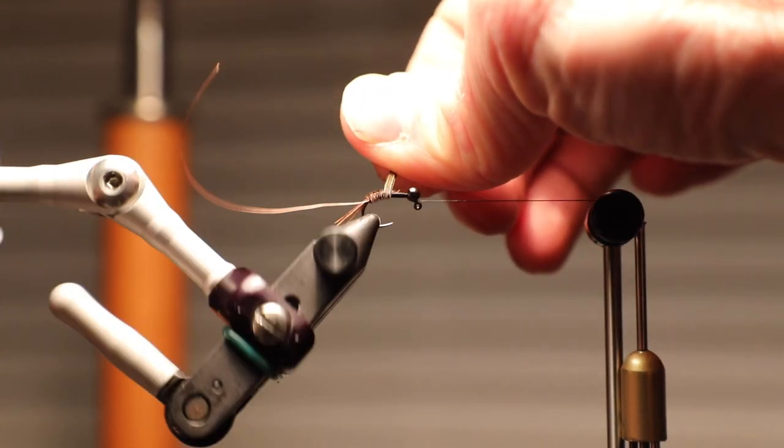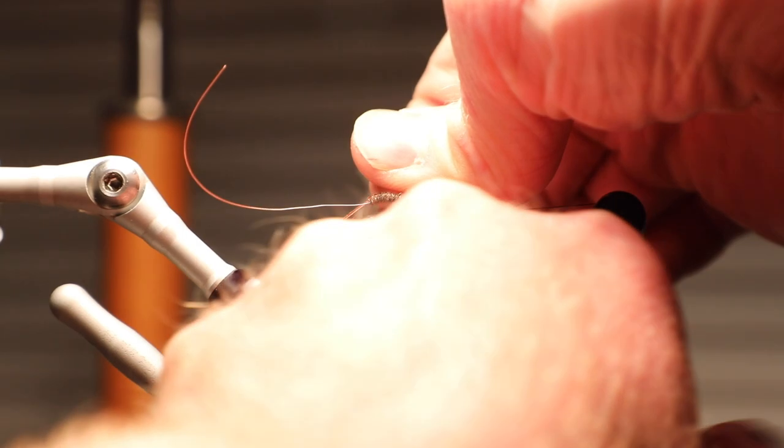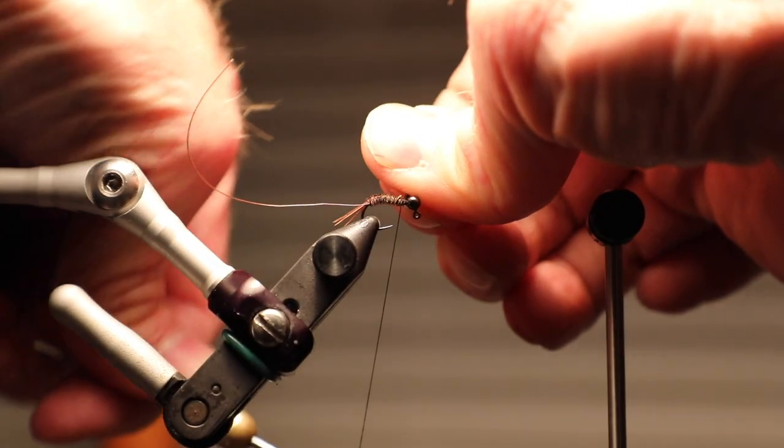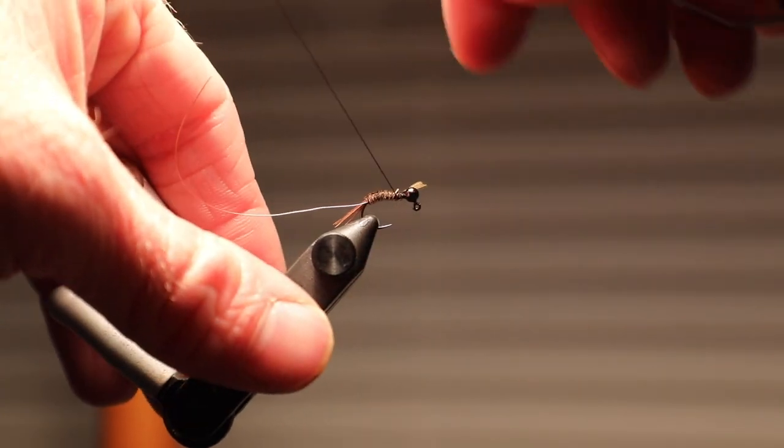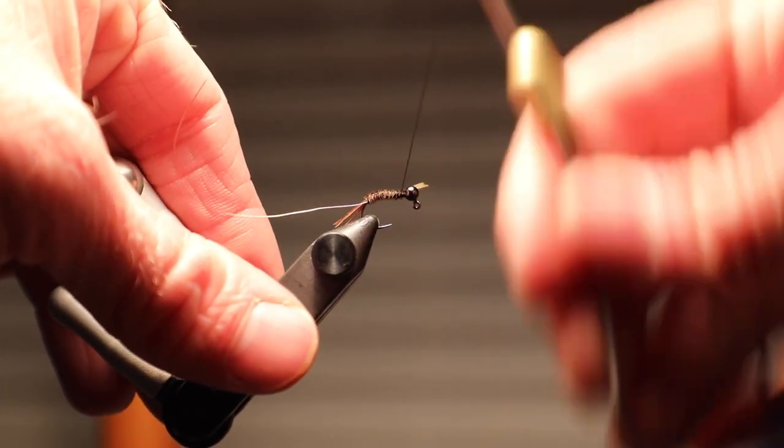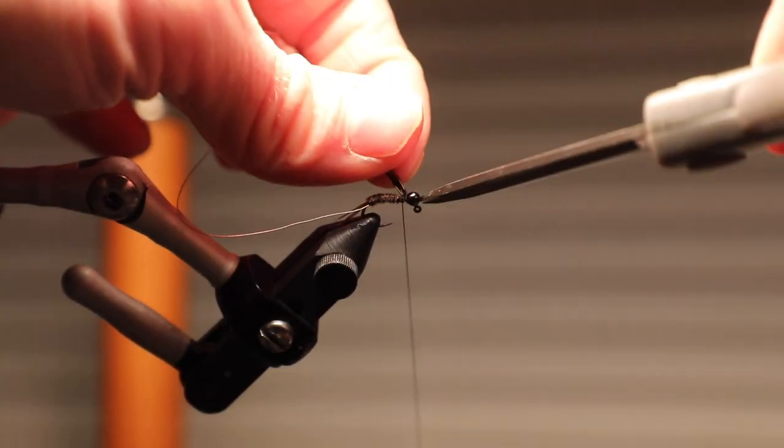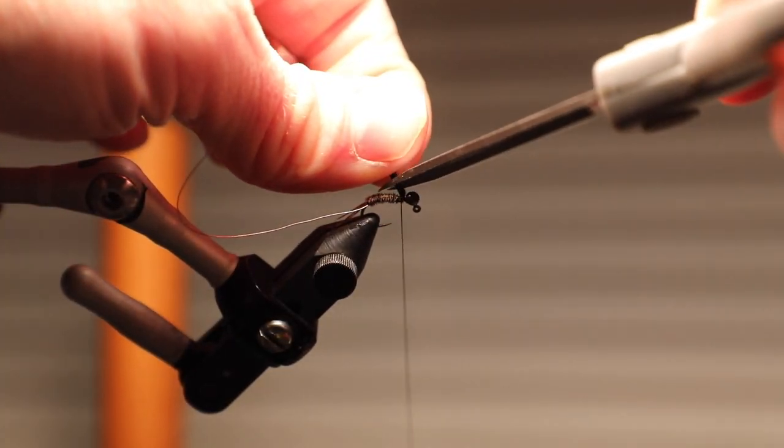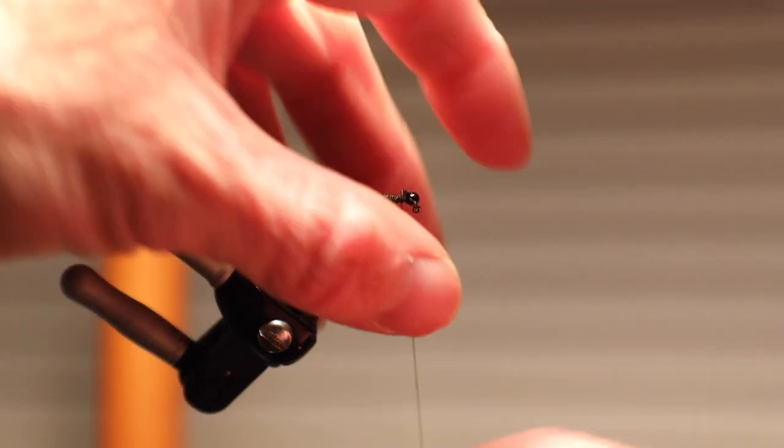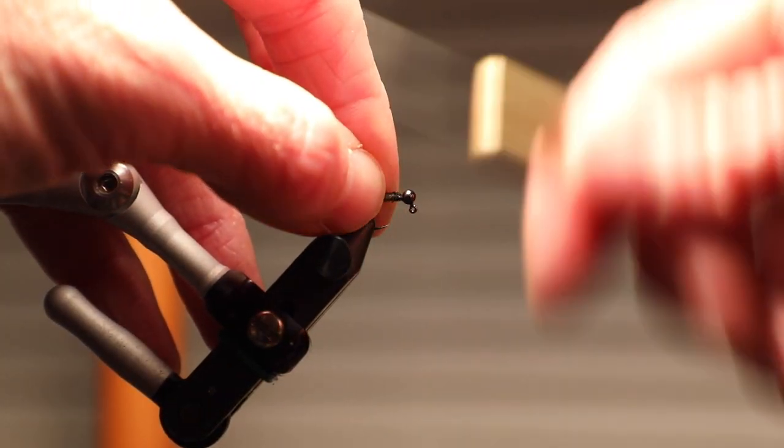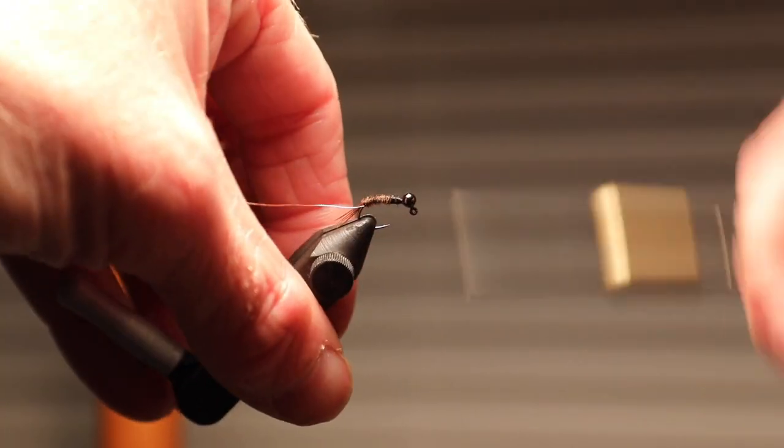I'm just gonna wind the pheasant tail fibers forward. And they don't have to get all the way to the bead, but you need them to be far enough up there. Looks like one of those fibers just broke, so I'm gonna make sure I catch it with my thread. There it is. Good to go. And I'm gonna clip those down. Leave just a little bit of those butt ends. I'm just gonna kind of double them back over on themselves with my thumb. Build that up just a little bit there.